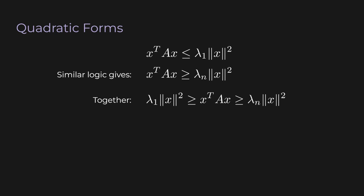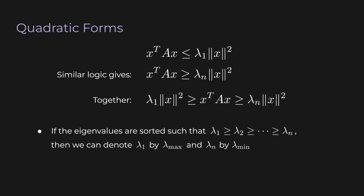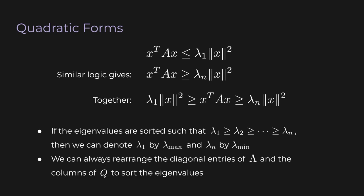Geometrically, for any real symmetric matrix A, the output of the quadratic form for any input vector x always lies between the squared norm of x scaled by the biggest and smallest eigenvalues. The biggest and smallest eigenvalues give a guaranteed range for the output. By convention, instead of λ_1 for the biggest eigenvalue, we sometimes write λ_max, and instead of λ_n, we write λ_min. Assuming eigenvalues are ordered doesn't restrict validity — we can always rearrange the diagonal entries of Λ as long as we rearrange the corresponding columns of Q.